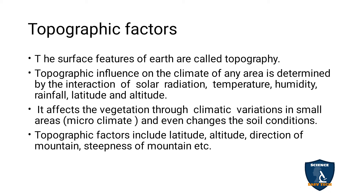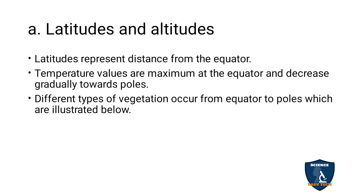Topography affects vegetation through climatic variation in small areas and even changes in the soil condition. The variation due to topographic factors affects vegetation — we have to see the variation in small areas and the changes in soil condition. Topographic factors include latitude, altitudes, direction of mountain, and steepiness of mountain.